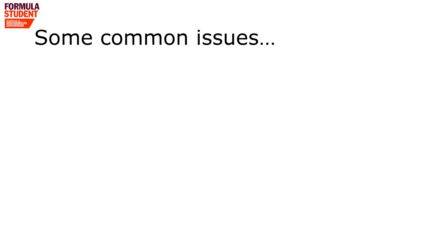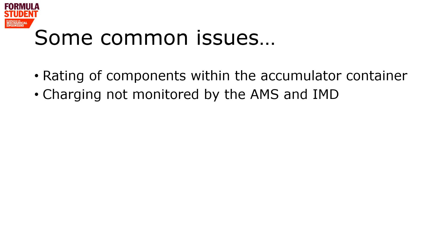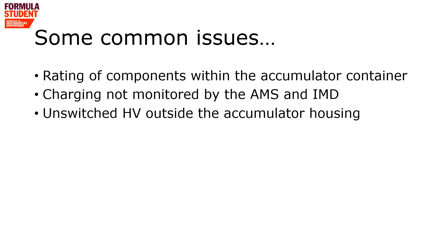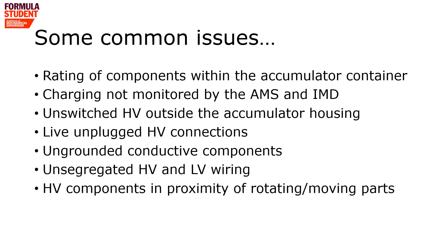What common issues do we find at scrutineering? Rating of components within the accumulator container — make sure things are appropriately rated for voltage, current and fire resistance. Make sure your charging is properly monitored by the AMS and the IMD, and that your charging shutdown circuit meets the requirements. Make sure there's no unswitched HV outside the accumulator container — it sounds obvious, but we find it every year. The same with live unplugged HV connections: there should be an interlock, and again, we find it every year. Check the grounding of all your conductive components. Make sure your segregation between HV and LV meets the requirements, and have a look at HV components in the proximity of rotating or moving parts — we always find something that needs to be moved.